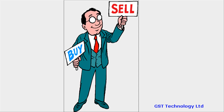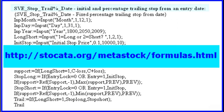However, I would advise not to deviate more than 3% of the common value to avoid too much optimization. I will use this Metastock formula to fix the starting date of the initial and trailing stop value.